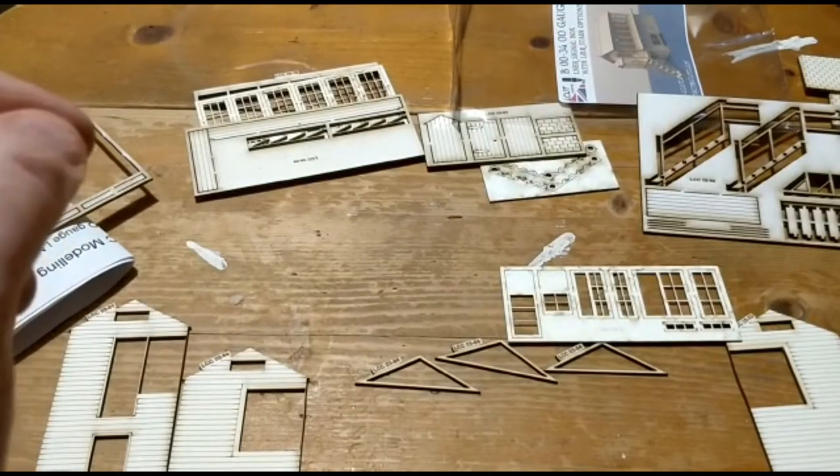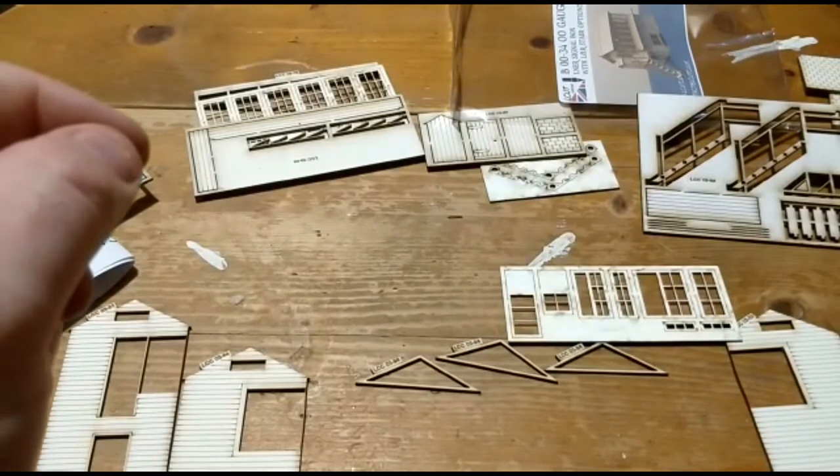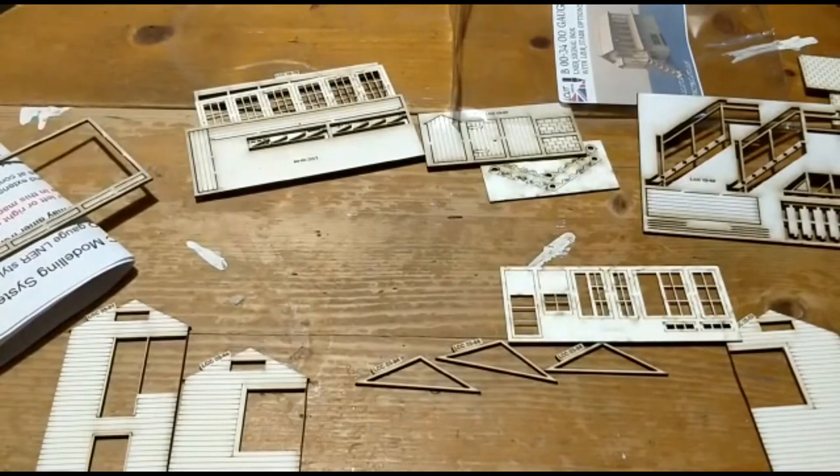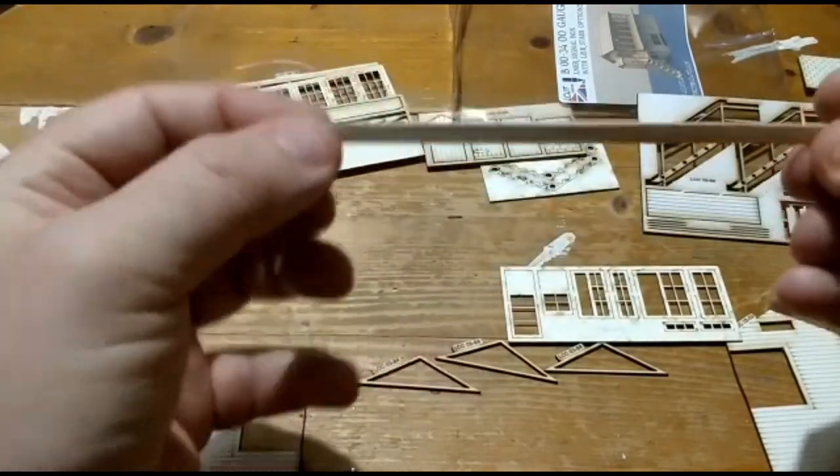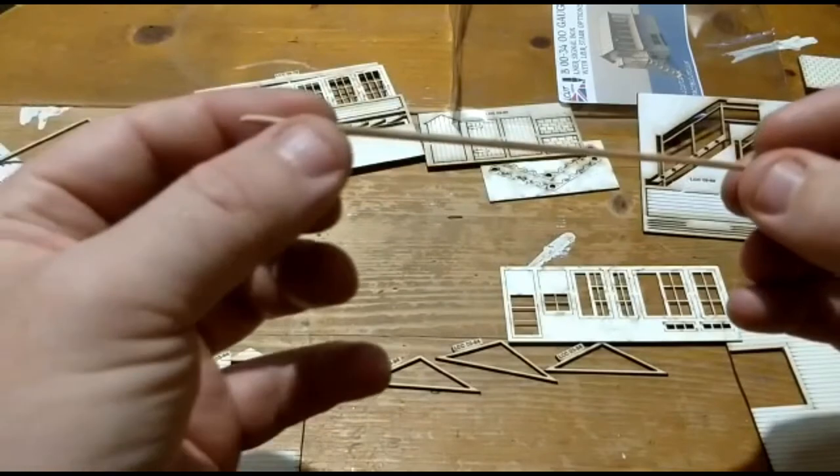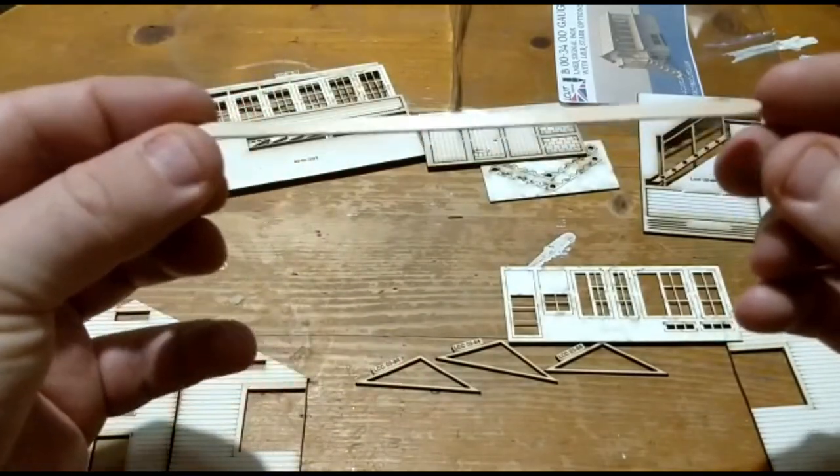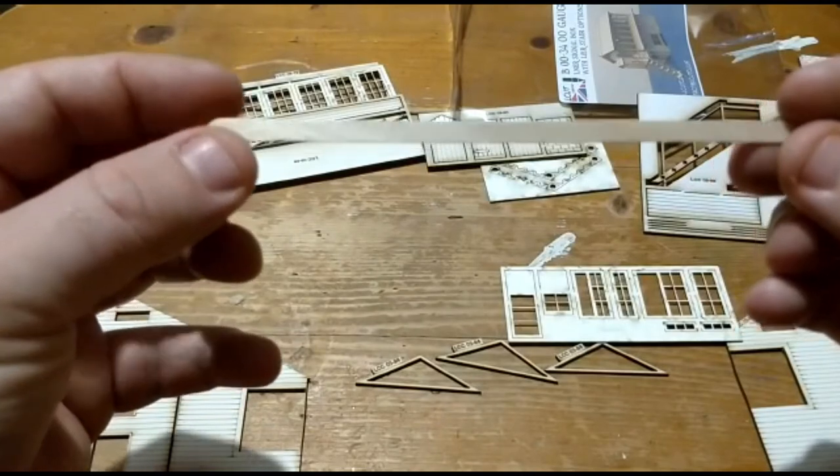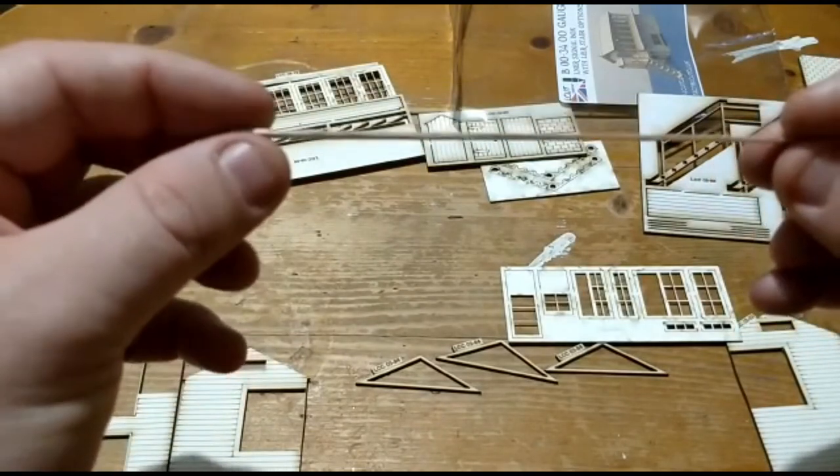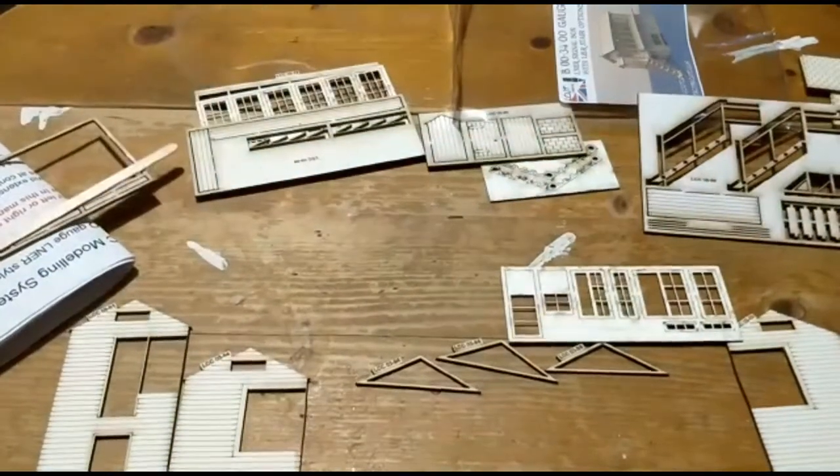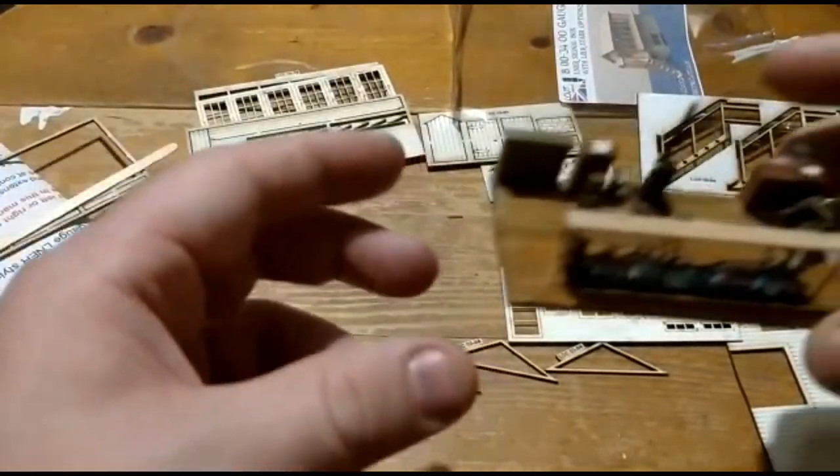Using an interior detailing kit and also coffee stirrers. These you can get from any good high street coffee shop and they are absolutely brilliant for scratch building, strengthening work, whatever you need to do. And what I've used them for is this.